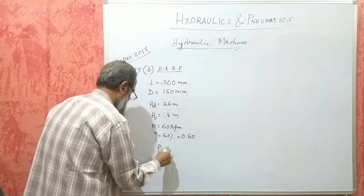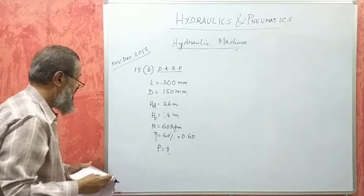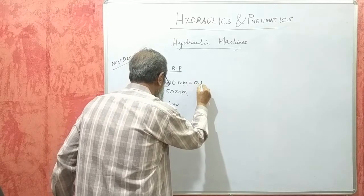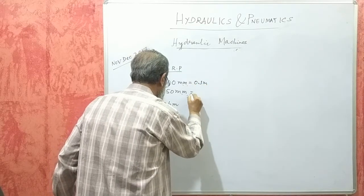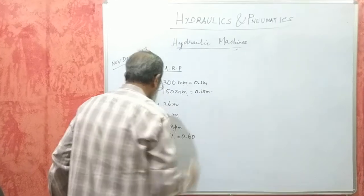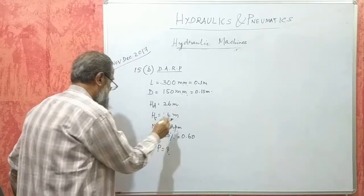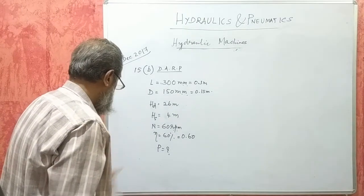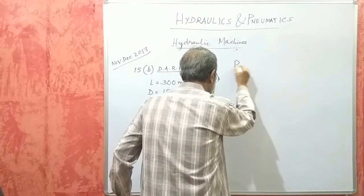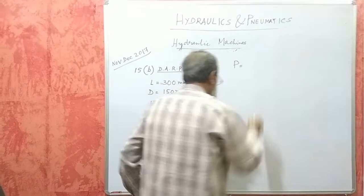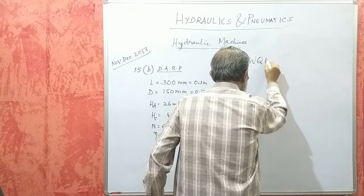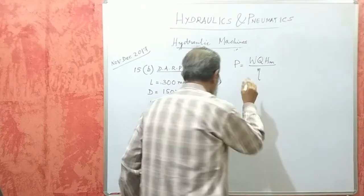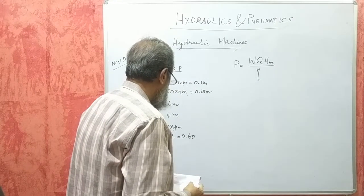What is the power required — how much power should we give it? Converting units: stroke L is 0.3 meters, diameter D is 0.15 meters. We want P, the power. The formula for P is W·Q·HM divided by efficiency. This is the formula we have to use.